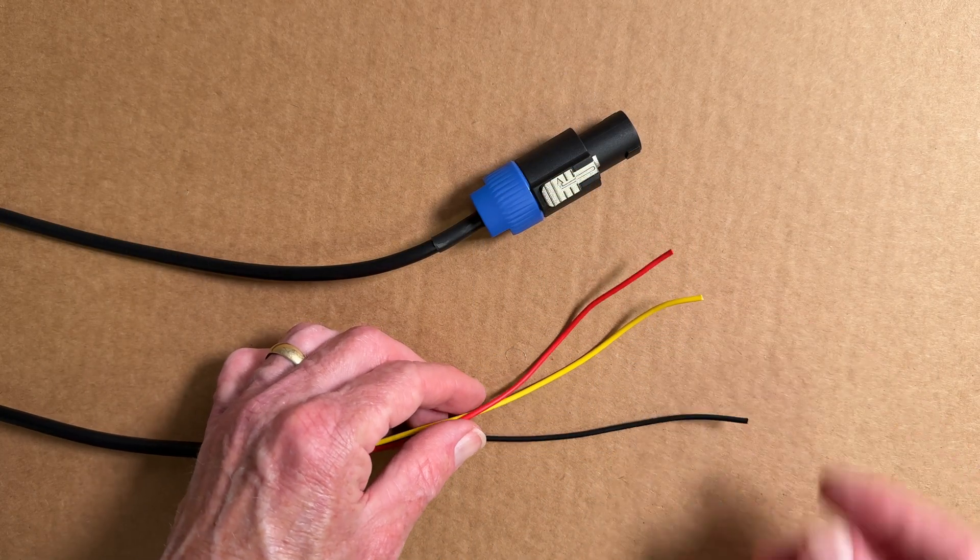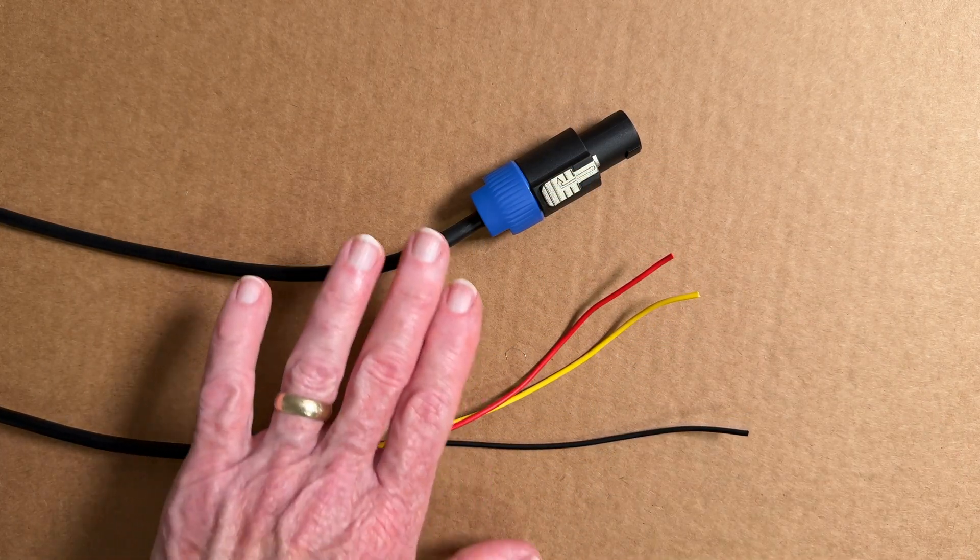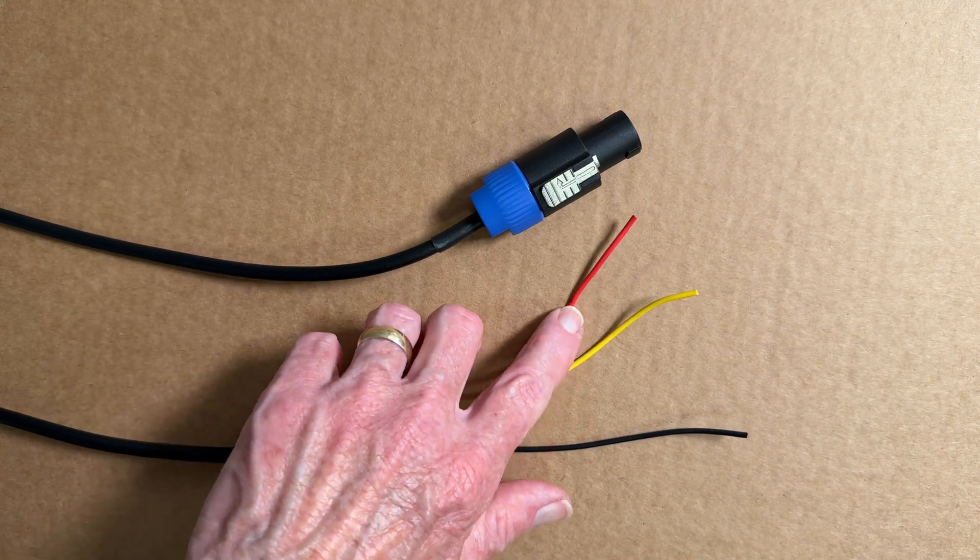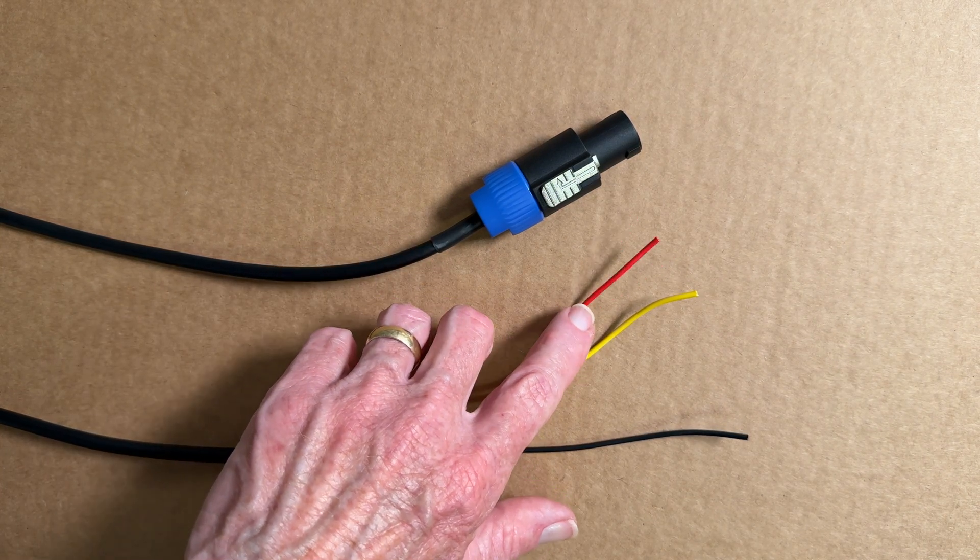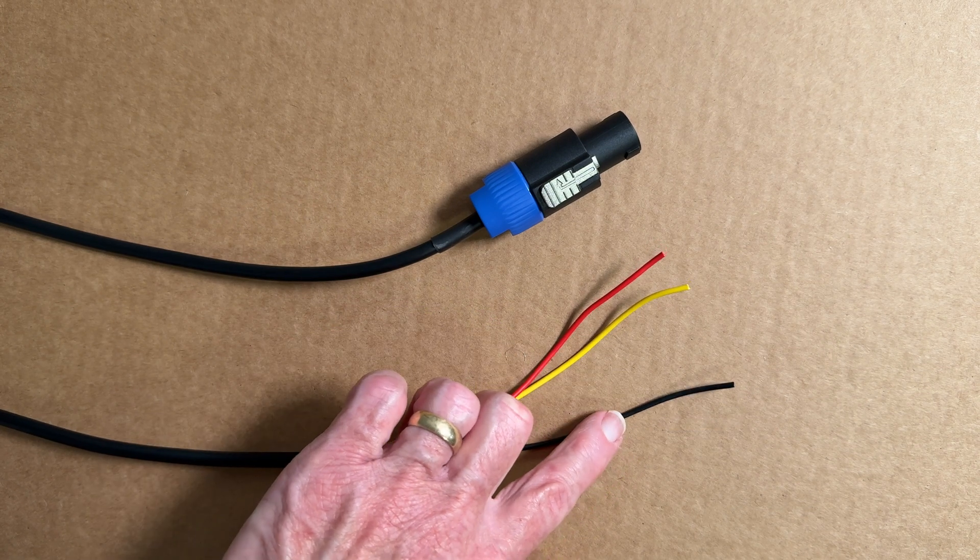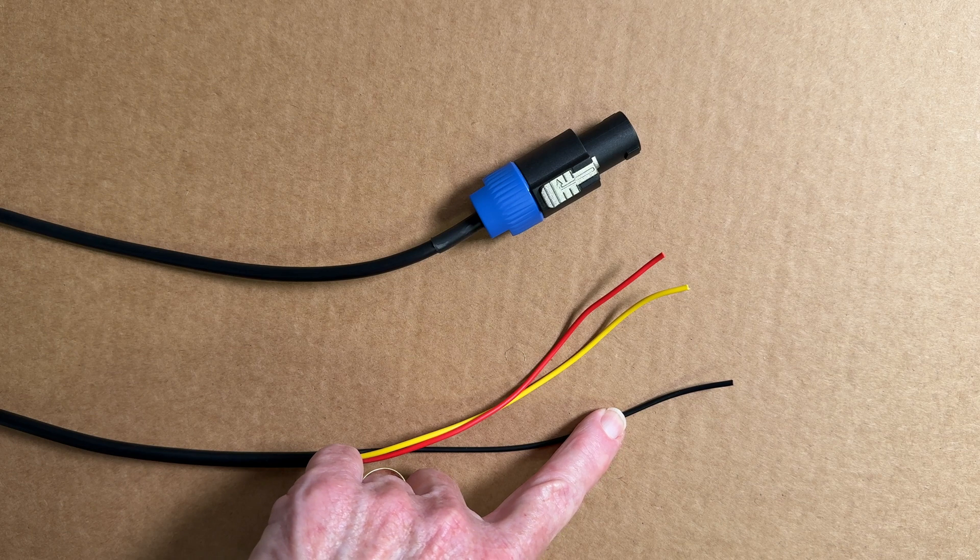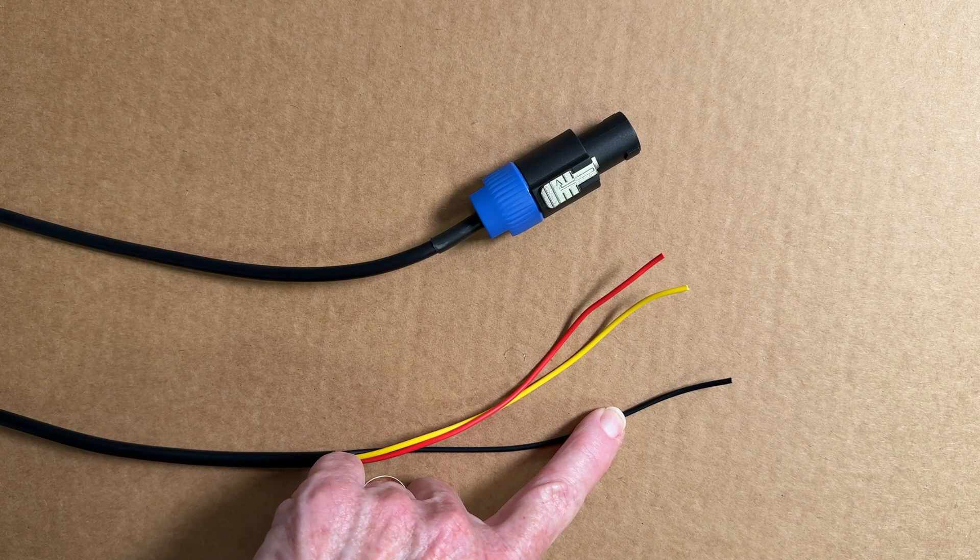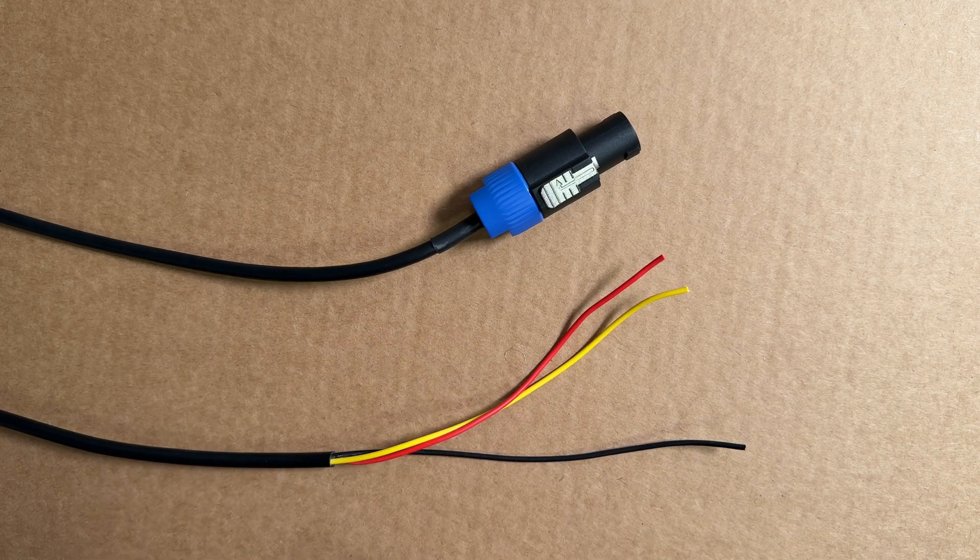There's three conductors. If you're going to hook one REL subwoofer up to both the left and right channel, you hook the red to the right speaker positive, the yellow to the left speaker positive, and the black to either the left or right speaker negative, or ground it to the chassis of your amplifier. It depends on your application.